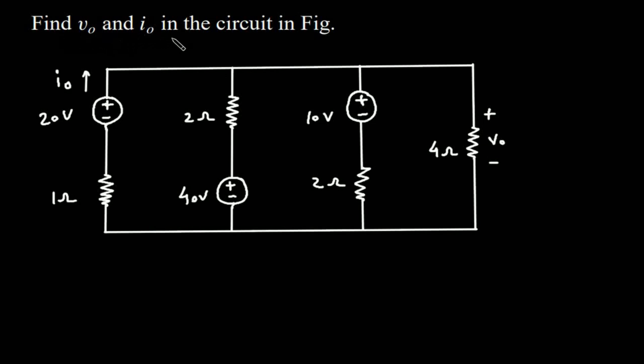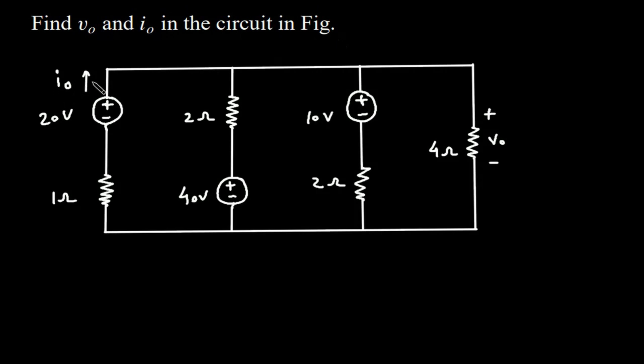Find V₀ and I₀ in the circuit in the figure. We have to find I₀ and V₀ in this circuit. Solution: First of all, we will redraw the circuit.